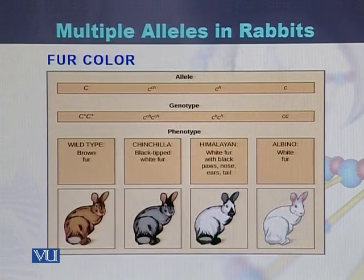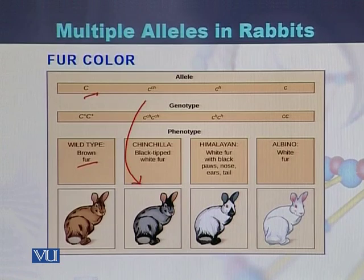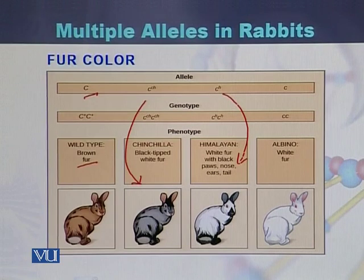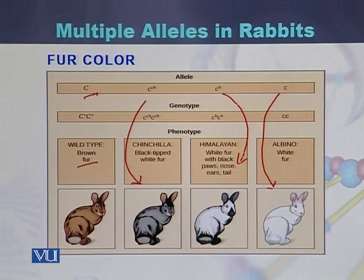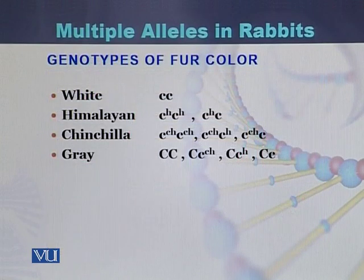Here we can see all four alleles and their genotypes. If there is allele C, the color will be brown or agouti. If there is cʰ allele, the color will be chinchilla, which has black tips with white fur. If there is allele h, it will be Himalayan type with white fur with black paws, nose, and tail. If there is allele c in recessive form, the fur color will be white. There are 10 different genotypes because there are four different alleles.